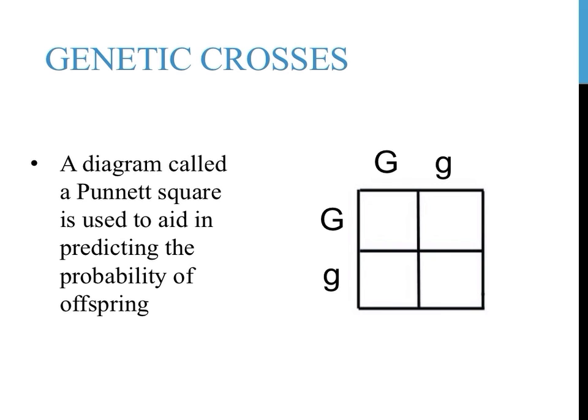What goes on the outside of the Punnett square are the genotypes of the parents. Sometimes these genotypes will be given to you, and sometimes you'll need to figure them out for yourself. One letter goes to the left and on top of each of the boxes in this Punnett square.